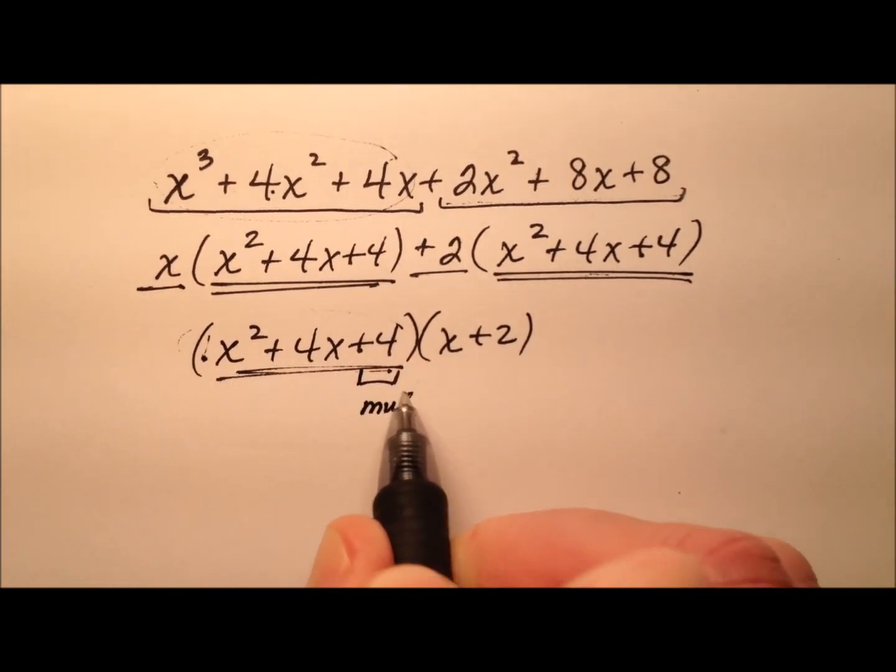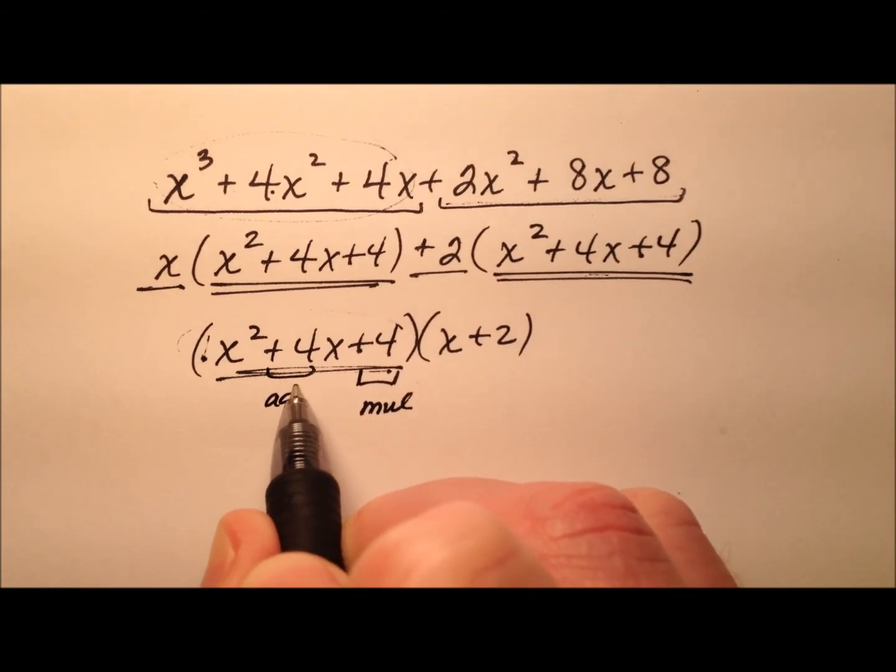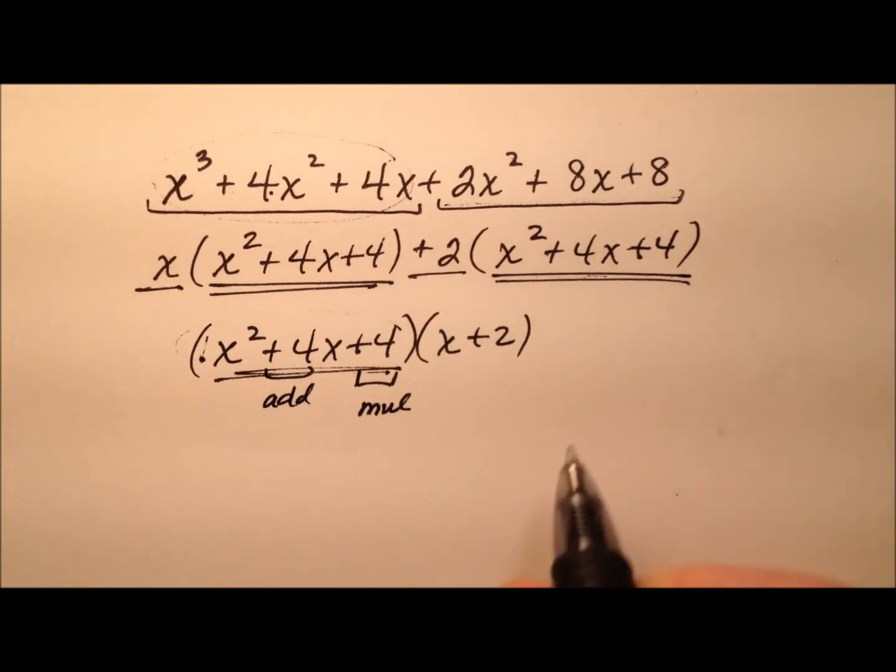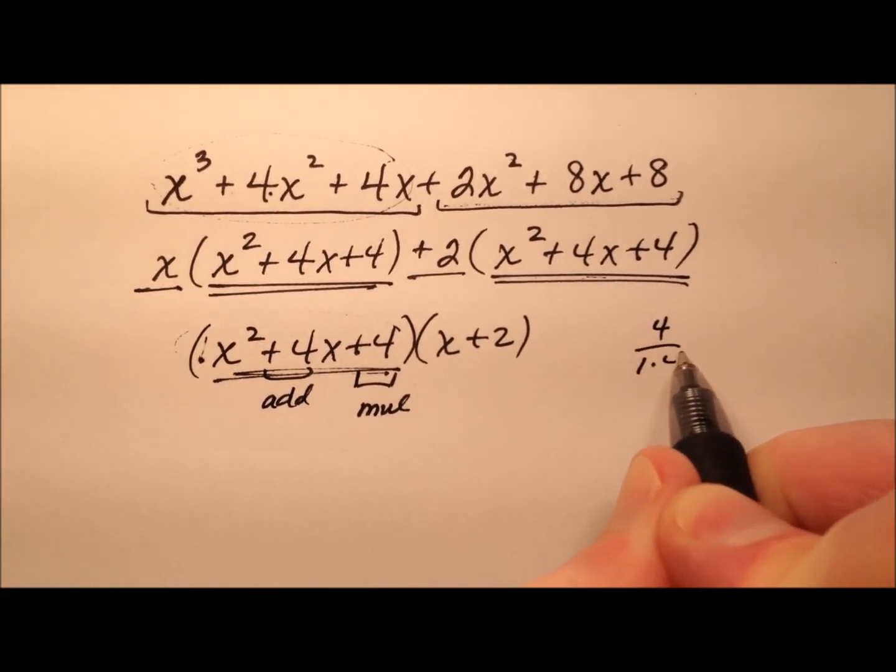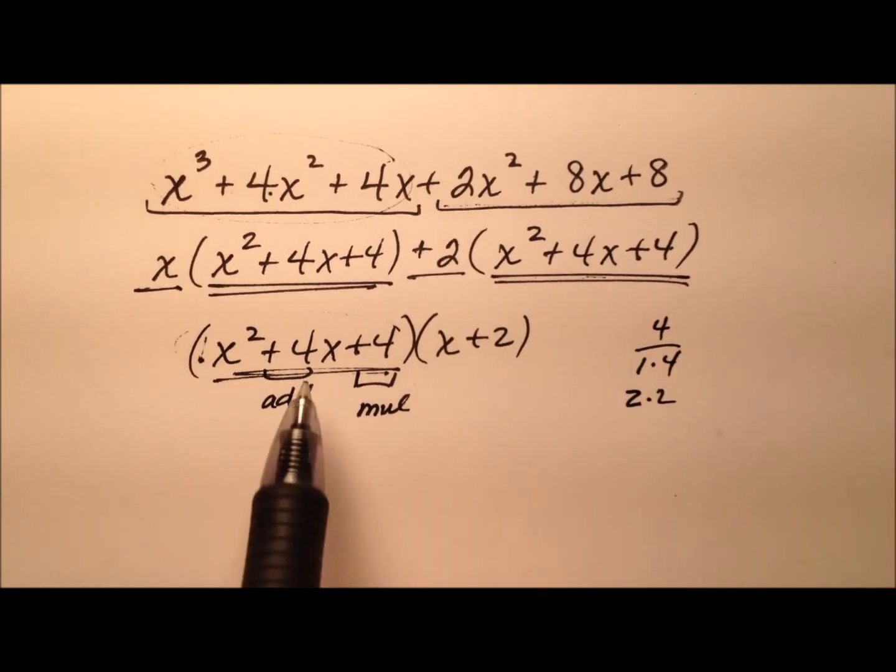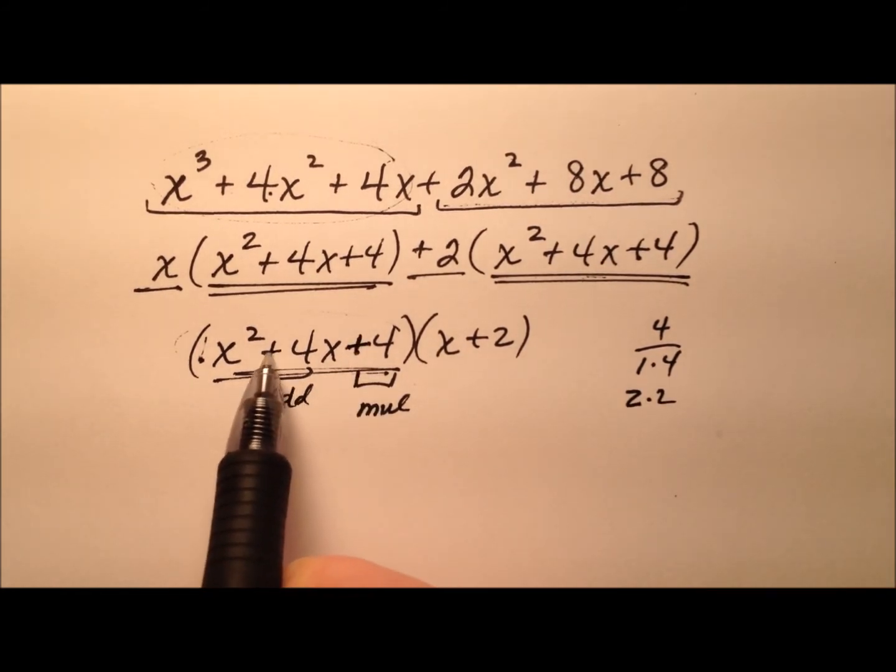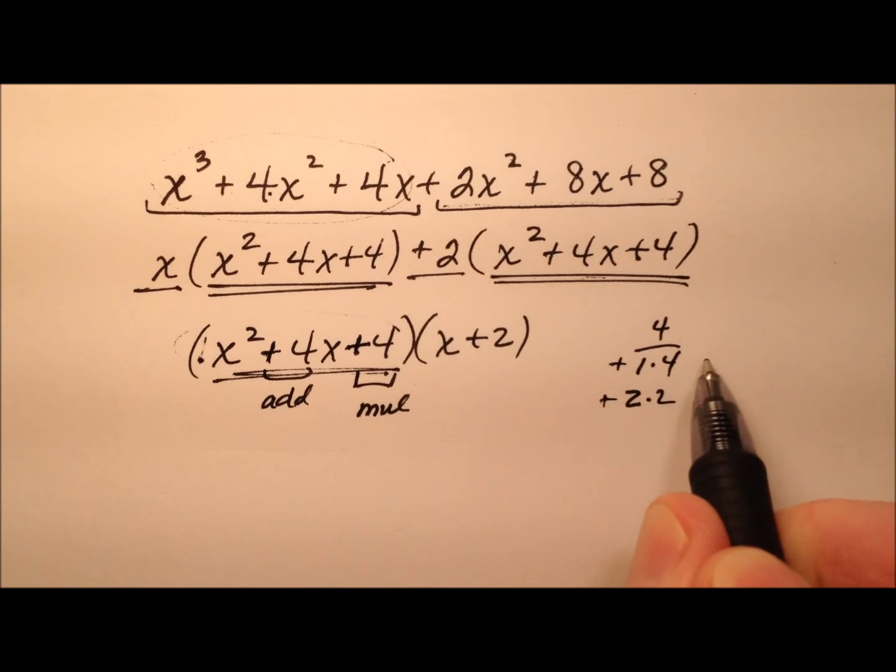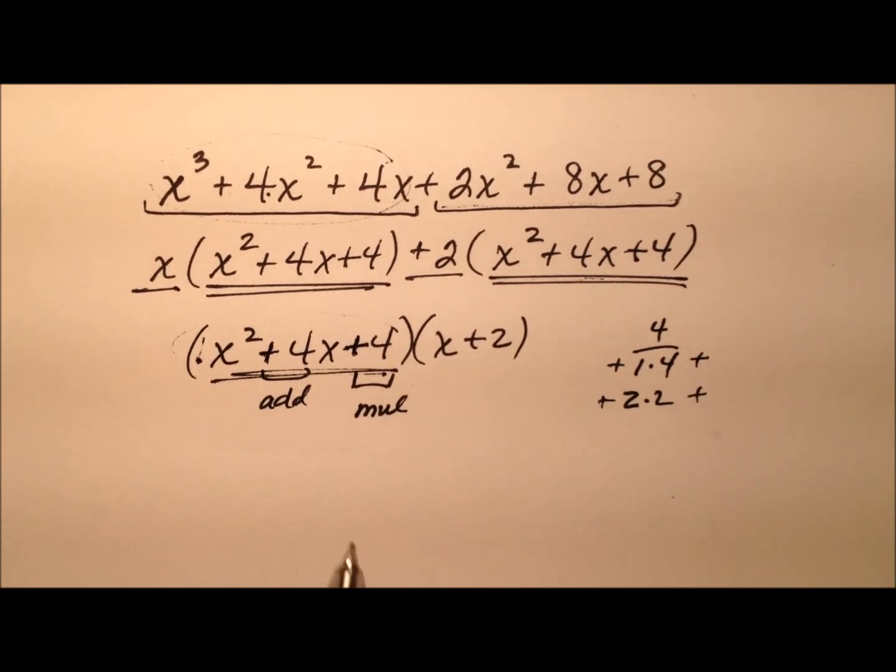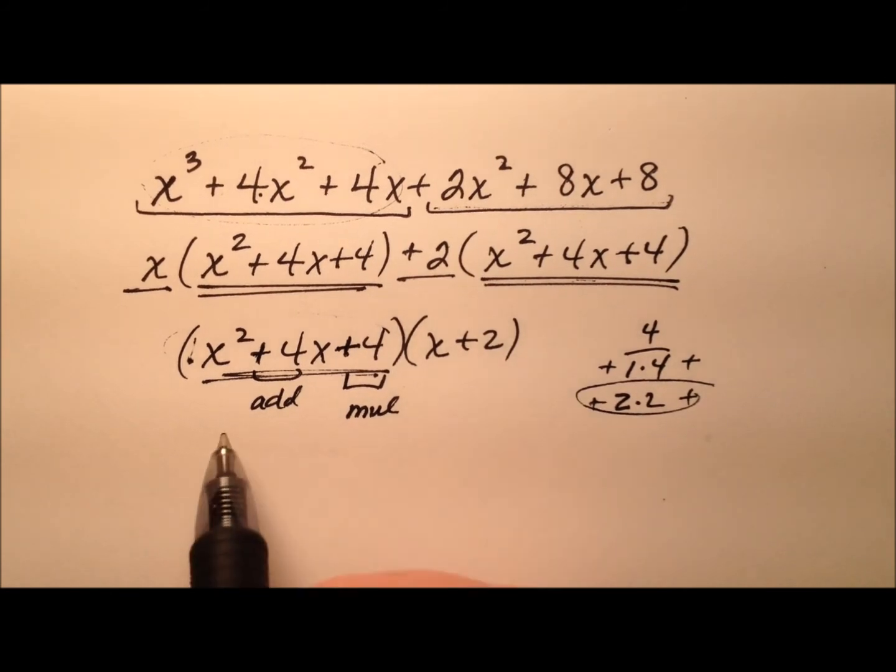So what multiplies to make positive 4 that adds to make positive 4? Well, factors of 4 are 1 and 4 and 2 and 2. And this is positive and this is positive, so we know that these will all be positive over here. And it looks like positive 2 and positive 2 works really well.